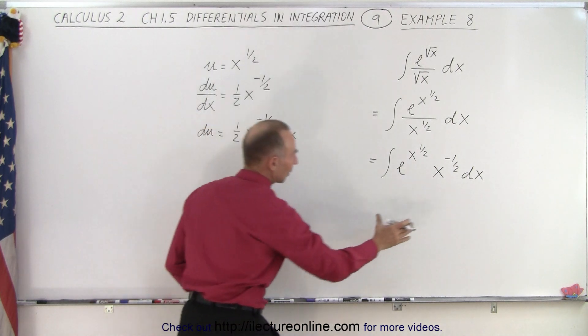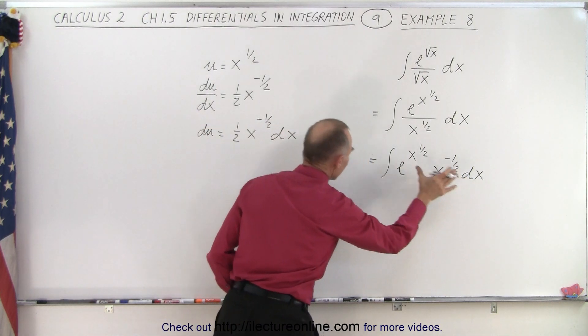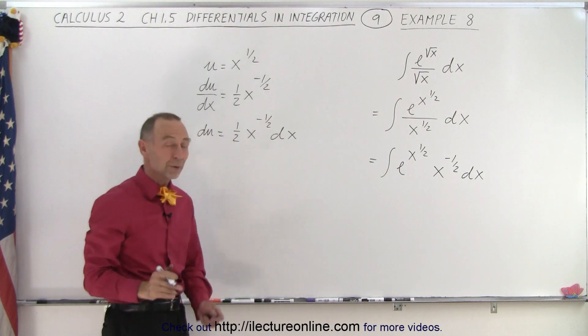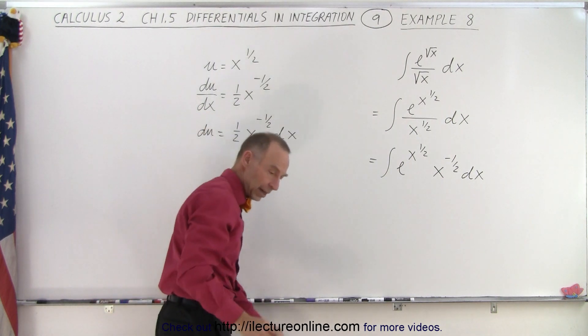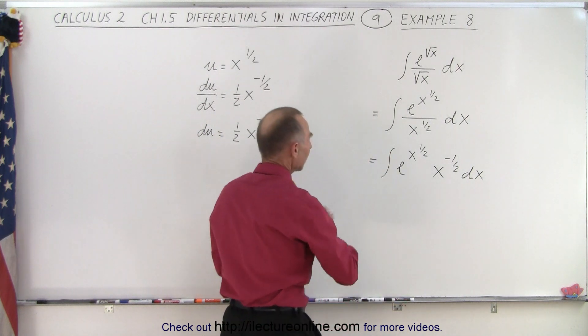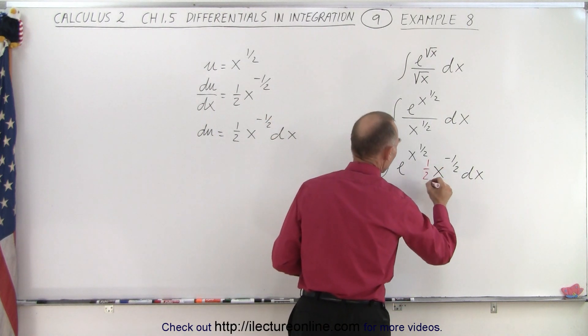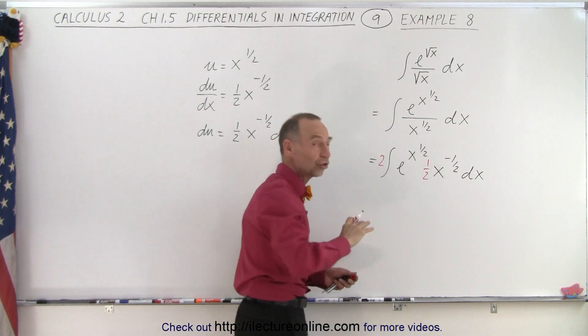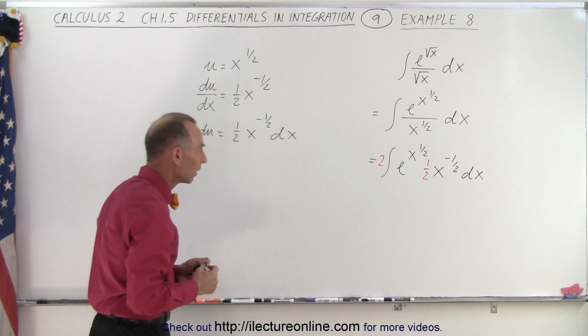And then I look over here and notice I have x to the -1/2 dx, but I don't have the 1/2, which means I need to multiply this times 1/2. Of course, then I also have to multiply times 2 to compensate for that so we don't change the integral.